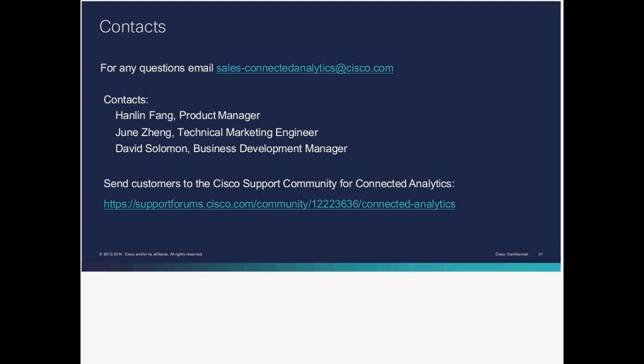There's a question about integration when having two data centers in two different locations using Cisco OTB. If you have two data centers, the collector can be positioned so it's reachable to all your devices even if they're in different data centers. You can have one central collector, or if you prefer, you can have two collectors in different data centers — that's perfectly fine.